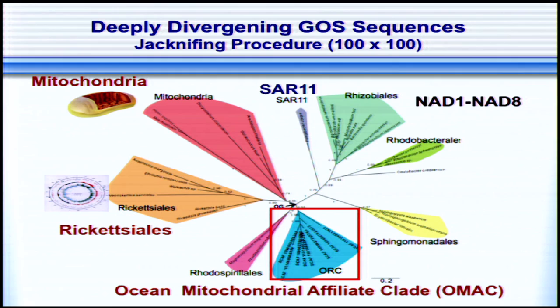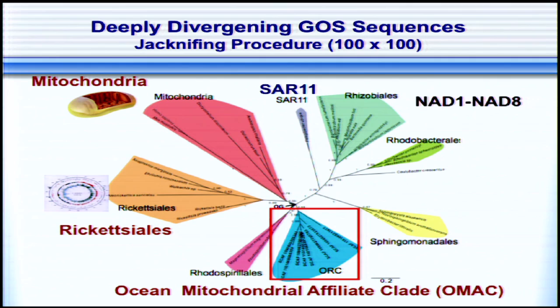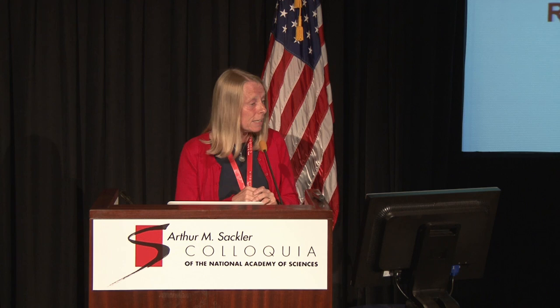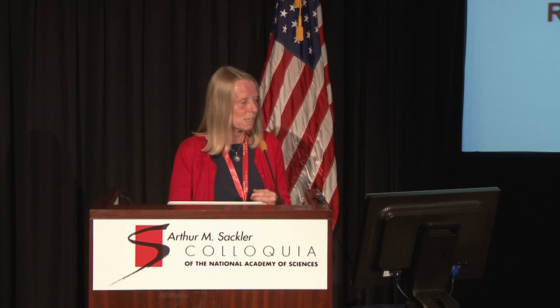We then did a tree with the most closely related sequences we could find, producing a clade we call the ocean mitochondrial affiliate clade. But even this clade is not extremely closely related to mitochondria — it's not closer than, for example, rickettsiales. It's deeply diverging in the alpha proteobacterial tree. So I would say this question is still a bit unresolved. Maybe there is no such closely related group, maybe mitochondria have evolved so fast that it's hard to find the closest relative, or maybe the bacteria just hasn't been found yet. With all the metagenomic sequencing of many environments, I'm sure that if there is a very closely related bacteria to mitochondria, it will be discovered within the next few years.